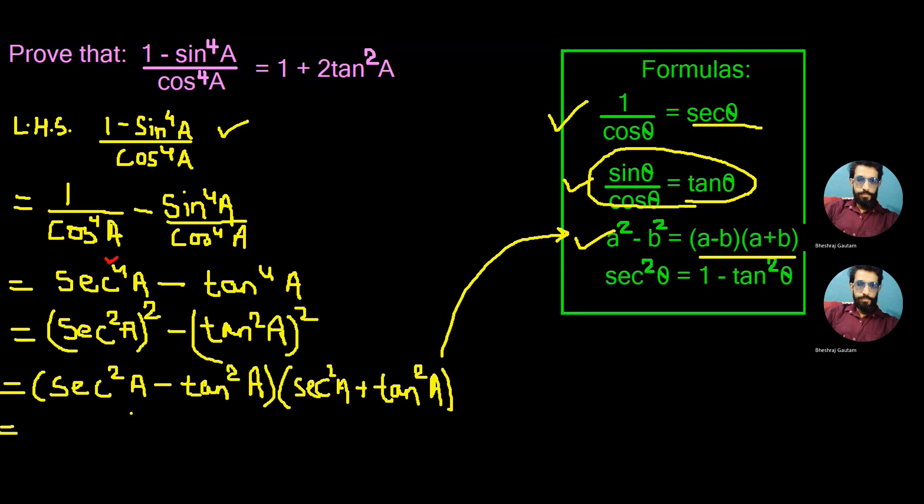As we know, sec square theta minus tan square theta equals 1, so let's write this as 1 times the second bracket. We can write sec square A using the formula sec square theta equals 1 plus tan square theta.